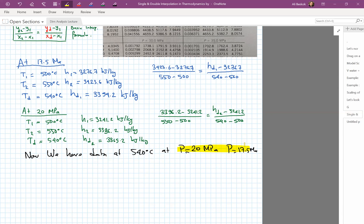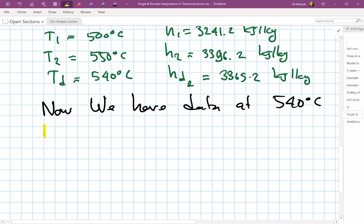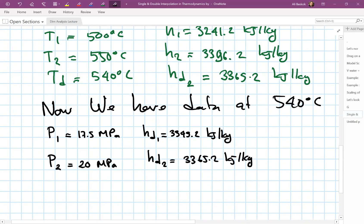Let's rewrite this in the following form. P1 equals 17.5 MPa, and at that pressure the enthalpy is HD sub 1, which was 3394.2 kilojoules per kilogram. P2 is 20 MPa, and the enthalpy is HD sub 2, which is 3365.2 kilojoules per kilogram. So we have these values. Now we're going to look at the pressure. Our desired pressure is 19.3 MPa, and we'd like to find H desired at that condition.